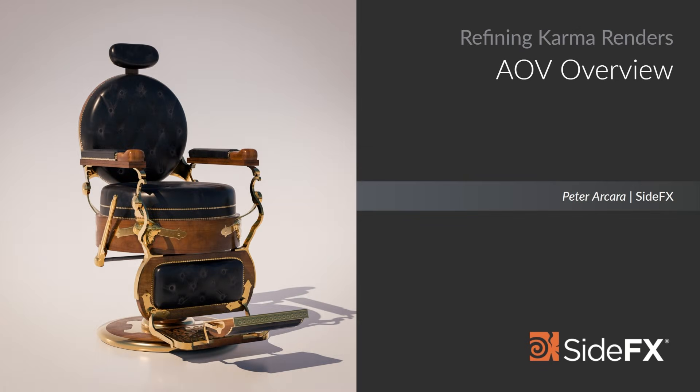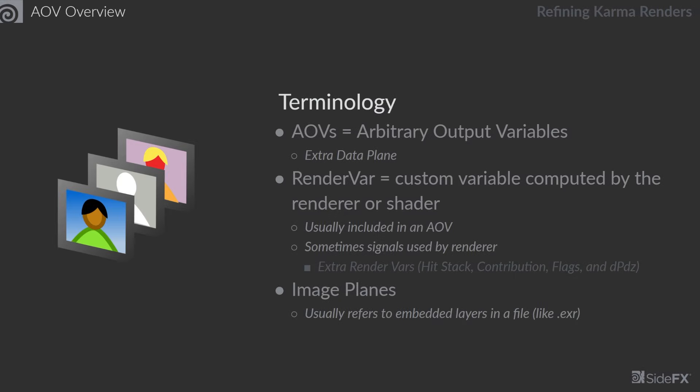AOVs will be used throughout this course, so let's take a little time to define what they are and some of the other terminology associated with them. Let's break down this terminology. An AOV stands for an arbitrary output variable. This is basically just an extra plane of data, an extra image plane that's passed along with the render as we're rendering our final image.